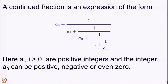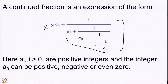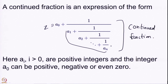Here, the integers a_i are positive integers from a_1 onwards, while a_0 is just an integer — it can be 0, positive, or even a negative integer. We have such an expression involving only finitely many integers; such an expression is called a continued fraction, because it involves fractions that are continued in some sense.